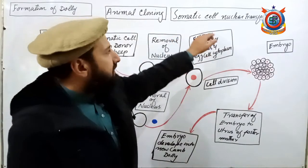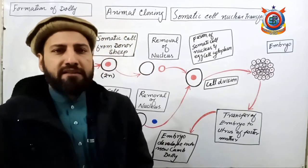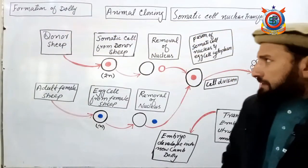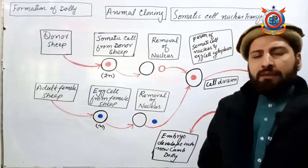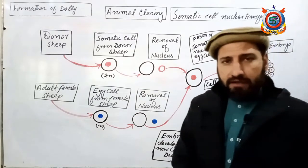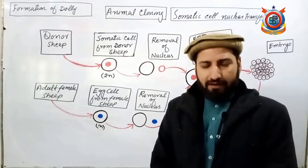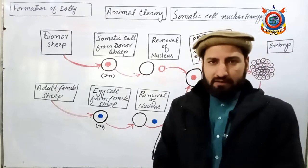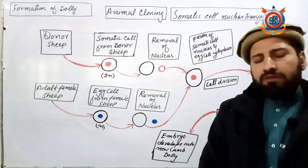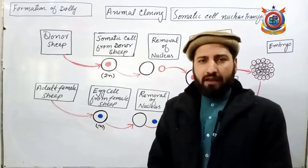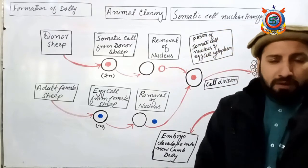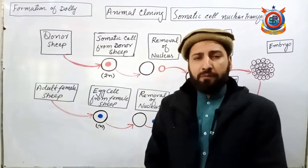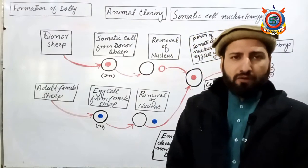Is technique ko somatic cell nuclear transfer technique bhi kaha jata hai. Ab define karte hain: animal cloning wo tariqa-e-kar hai jis mein hum ek somatic cell se pura animal bana sakte hain — ek aisi technique jis mein ek cell mein cell division shuru kawa ke aap ek pura animal bana sakte hain. Wo animal us organism ki exact copy hoti hai jis se aap somatic cell lete hain. Cloning ek aisi technique hai jis mein hum genetically identical organisms ki puri population bana sakte hain.